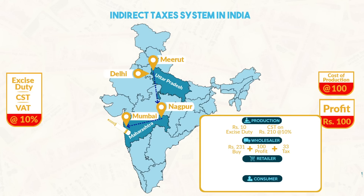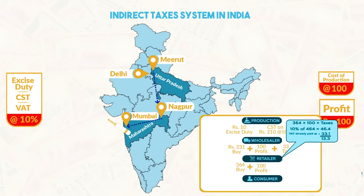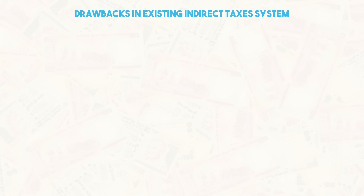The wholesaler, who bought it for Rs. 231 (Rs. 210 + Rs. 21 tax), makes a profit of Rs. 100 and charges Rs. 331 plus VAT at 10%, which comes to Rs. 33, paying this to the Maharashtra government. The retailer, who bought it for Rs. 364 (Rs. 331 + Rs. 33), earns a profit of Rs. 100 and sells it to the consumer for Rs. 464 plus VAT at 10%. The VAT paid is 10% of Rs. 464 minus the tax already paid of Rs. 33, so the net liability is Rs. 46.4 minus Rs. 33, which equals Rs. 13. Therefore, the consumer finally pays Rs. 464 + Rs. 13 = Rs. 477.